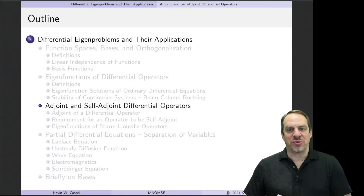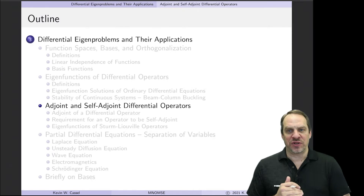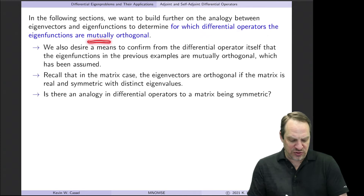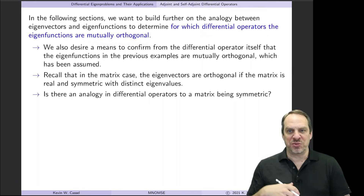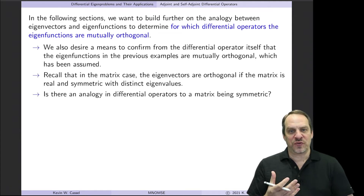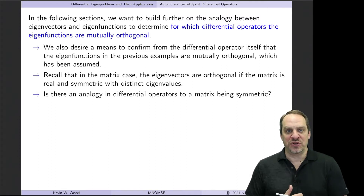We've been discussing differential eigenproblems in the context of ordinary differential equations thus far. Before we get to partial differential equations, I'd like to take a look at an issue we've left unaddressed: what's the requirement for a differential operator to have mutually orthogonal eigenfunctions? We've been assuming that's the case in the examples done so far, but we want to further build on the analogy to the algebraic eigenproblem to determine this.